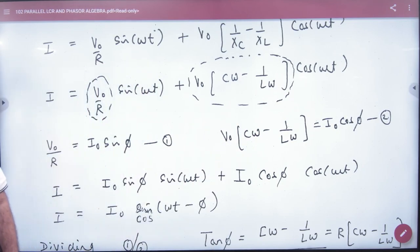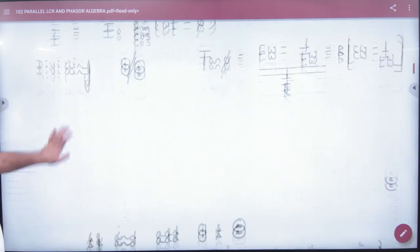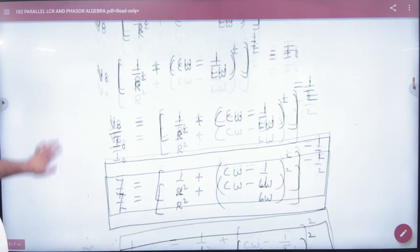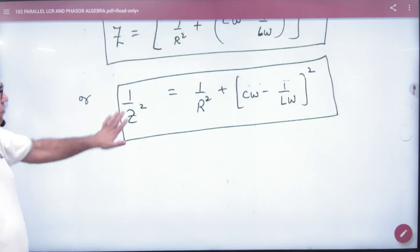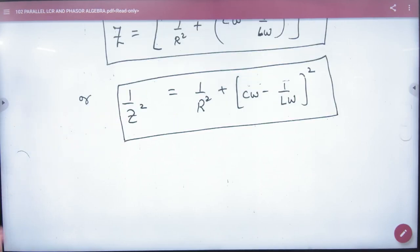cos² + sin² = 1. Simplify it. You will have this formula. So please write this formula.